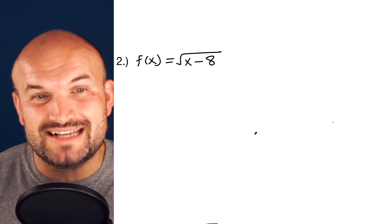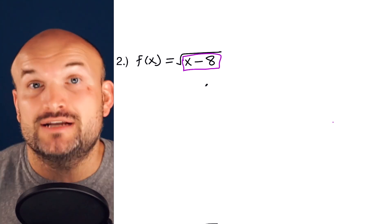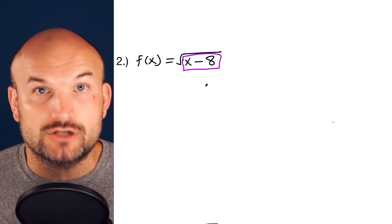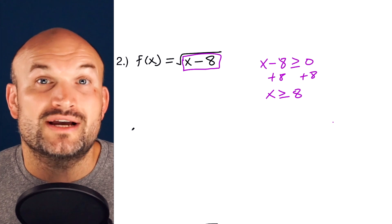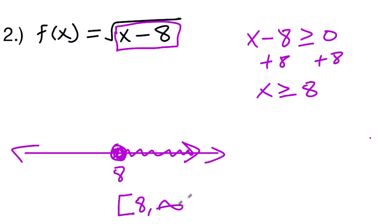In example two, I have f(x) = √(x − 8). Remember, we cannot take the square root of a negative number, so whatever is under the radical — the radicand — has to be greater than or equal to zero. I set x − 8 ≥ 0 and solve to get x ≥ 8. Since 8 is included (the square root of zero is valid), the domain in interval notation is [8, ∞).